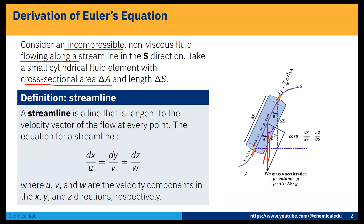The line of action of the weight of the fluid element makes an angle θ with the direction of flow or streamline. If we decompose that weight force, one component acts opposite to the flow, which equals ρ δA δS g cosθ.